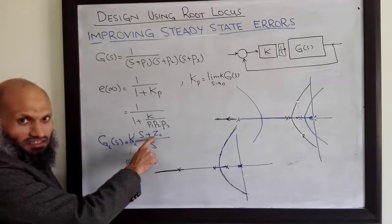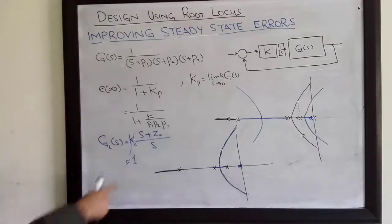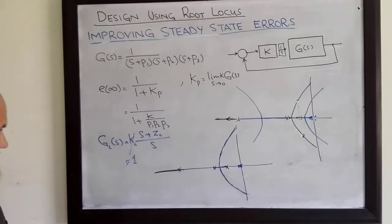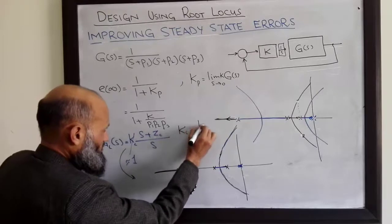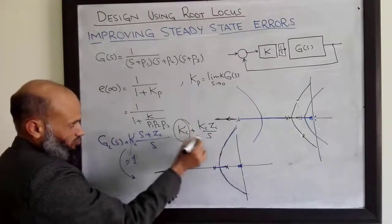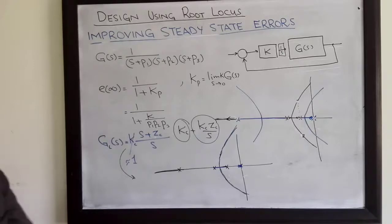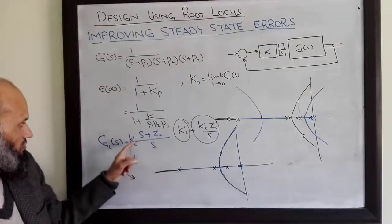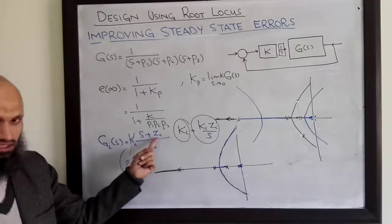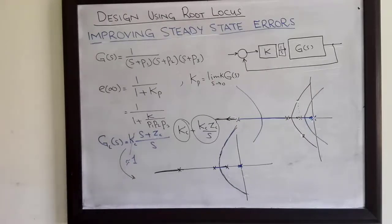The value Zc should be a small number such that the zero is very close to the pole at the origin. This kind of controller is called a PI controller — proportional plus integral controller. Writing it in expanded form: this is Kc plus Kc·Zc over S, where the first term is the proportional term and the second is the integral term. The PI controller is utilized to eliminate or reduce steady state error. The design procedure is simple: place a pole at the origin and a zero very near to it. The only parameter to determine is Zc; Kc is almost always equal to 1.